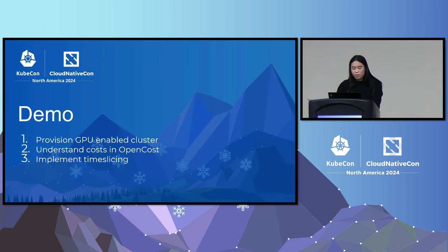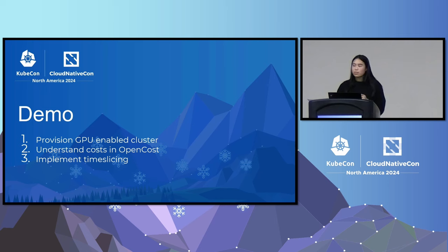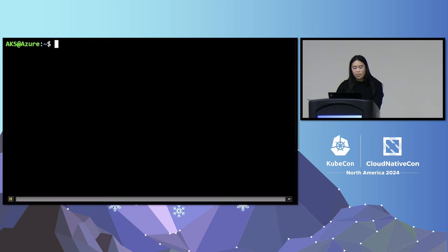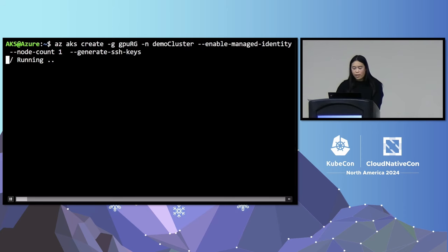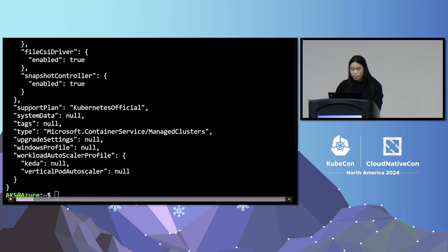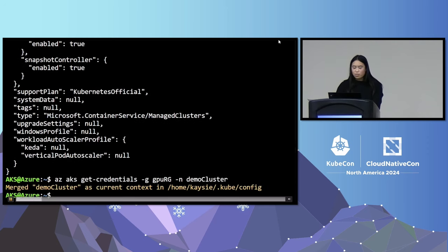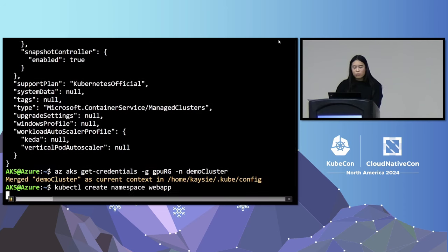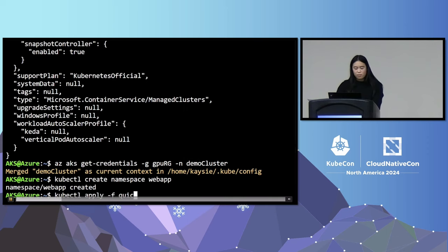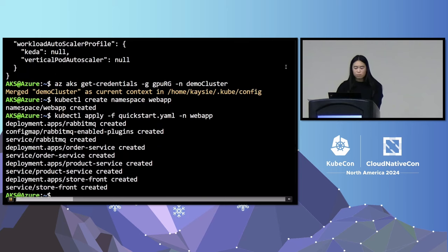Now for the demo, which has three parts. First, we'll create a Kubernetes cluster with a standard node pool and a GPU node pool with the GPU operator enabled. Then we'll install Prometheus and OpenCost and show the OpenCost API for GPU costs. Finally, we'll implement a time slicing GPU configuration. Here in the CLI, I'm creating a standard AKS cluster with a node count of one for demo purposes. I'll create a namespace and deploy a basic web app, and we'll see all the Kubernetes resources being created.